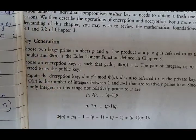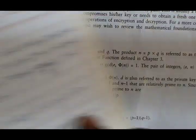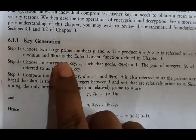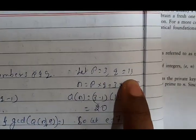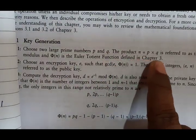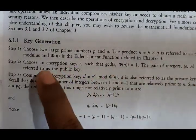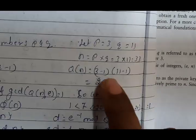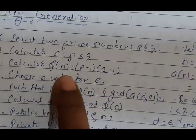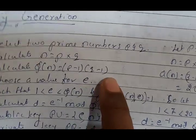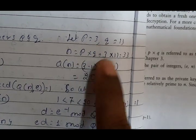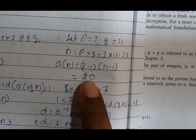Let's take an example. In step 1, choose two prime numbers P and Q. Let P equal 3 and Q equal 11. The product N equals P times Q, which is 3 times 11 equals 33. Then find φ(N), which is (P minus 1) times (Q minus 1), so φ(N) equals (3 minus 1) times (11 minus 1), which equals 20.